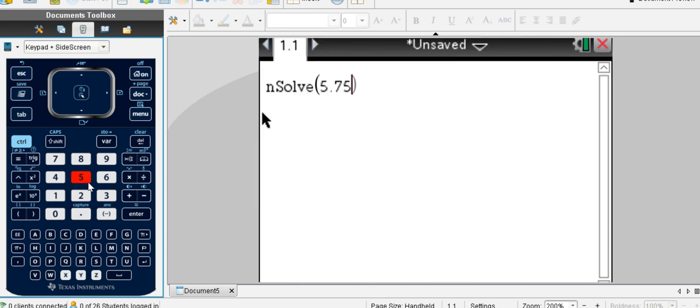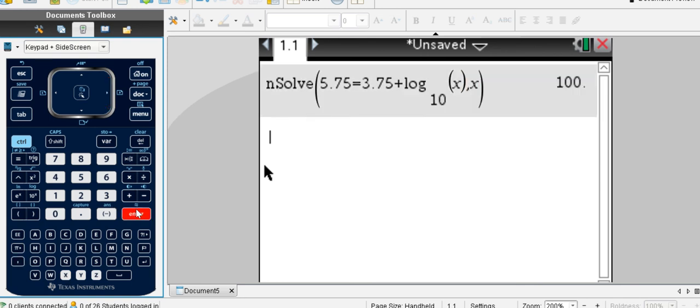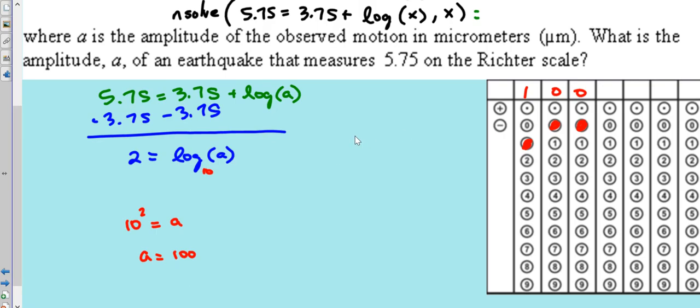5.75 equals 3.75 plus log, which is over here, control, 10 to the power of X, log. The base, we didn't show one, so I'll leave that empty. I have X, and then I do comma X. It'll automatically put the 10 there. It's a common logarithm, and it says the answer is, in fact, 100. So we did it correctly.